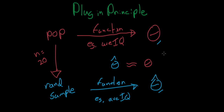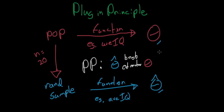Fortunately, we have one principle that tells us something about theta hat in relation to theta — the plug-in principle. It says theta hat is the best estimator of theta given two conditions. Condition one: we don't know anything else about the population. If we had other information, like what type of distribution the population follows, we could construct a better estimator. Condition two: as n goes to infinity — as our sample size gets really big — theta hat becomes a great estimator for theta.